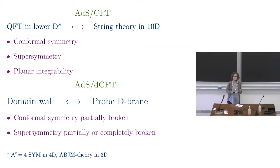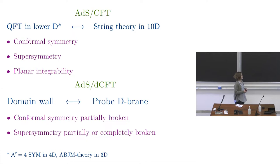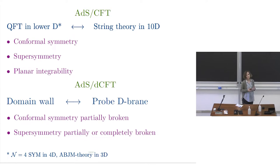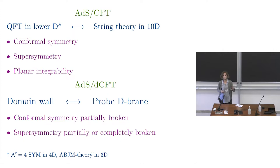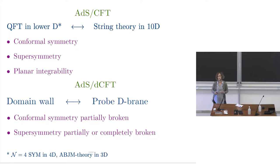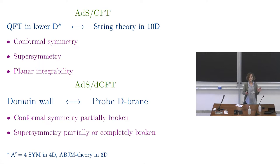AdS/CFT is basically a common framework for string theory in ten dimensions and a quantum field theory in lower dimensions. This framework has a lot of symmetry: conformal symmetry, supersymmetry, and a third kind — integrability — at least in the planar limit. I will consider two cases where integrability is well understood: a four-dimensional theory which is N=4 Super Yang-Mills, and a three-dimensional theory known as ABJM theory. I will introduce a domain wall on the field theory side, which corresponds on the string theory side to introducing a probe brane that does not interfere with the usual string theory background.